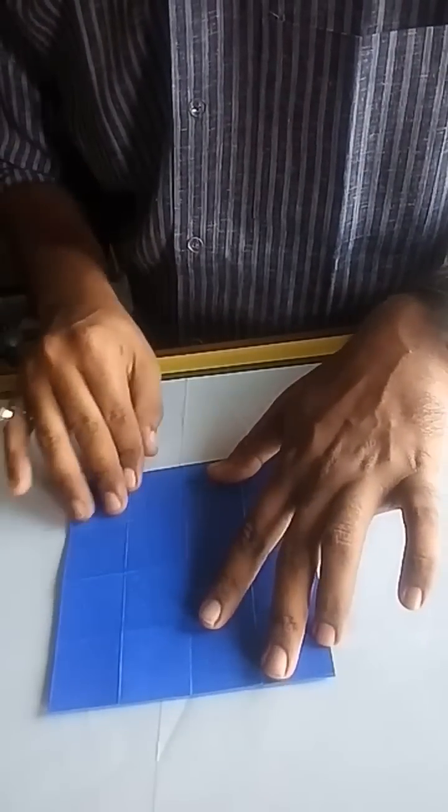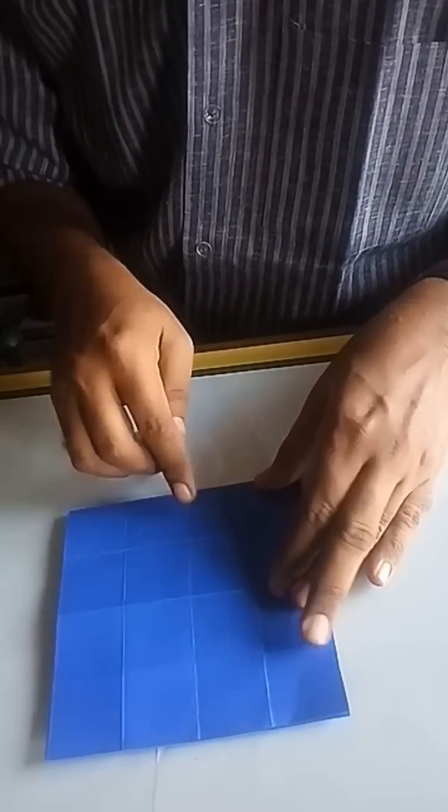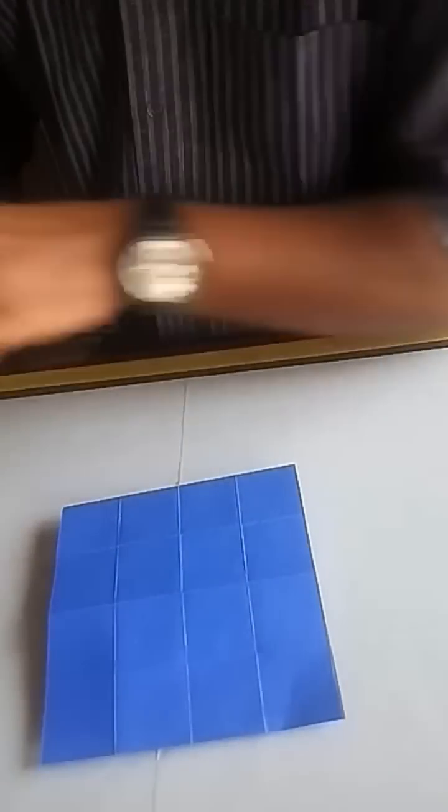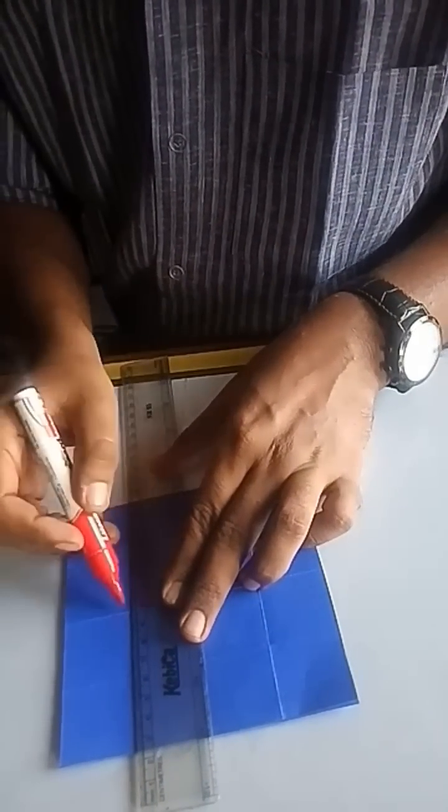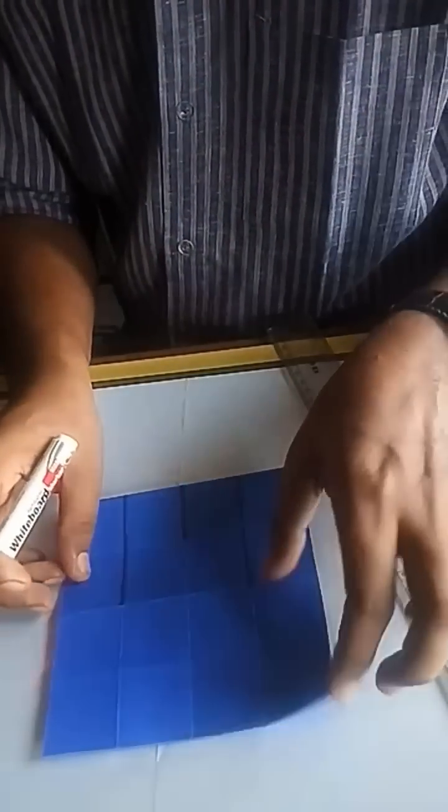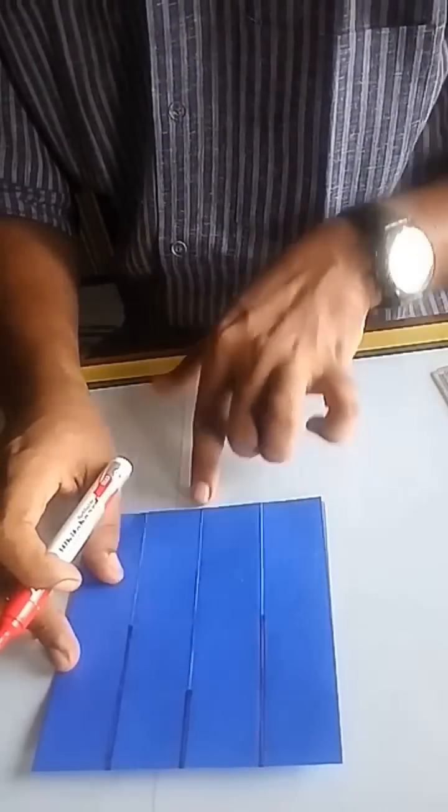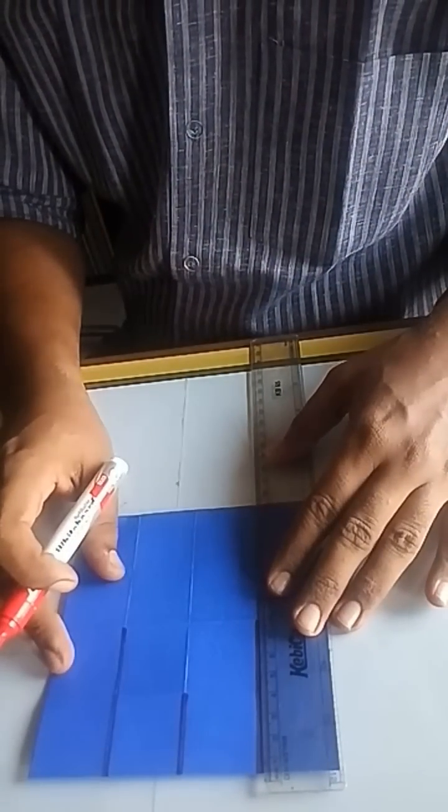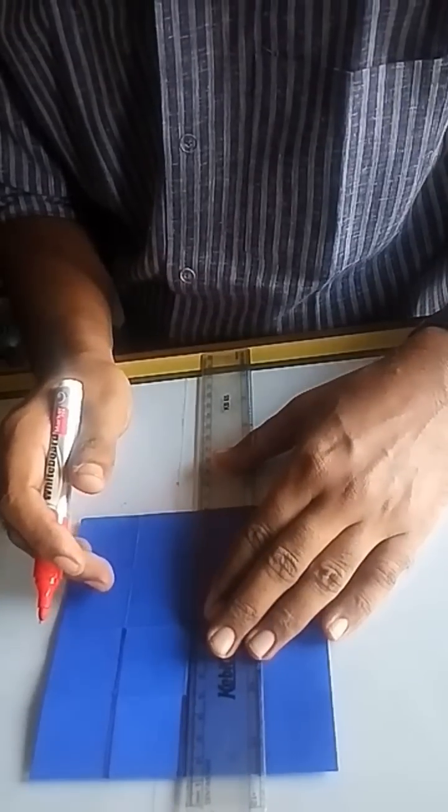Fold the sheet along the breadth and the half. One end is closed and the other end is open. Now mark two one two creases at the closed end and one two one creases at the open end.